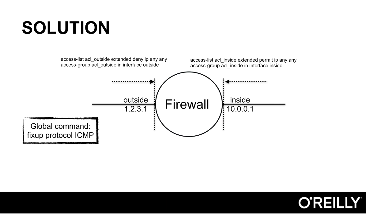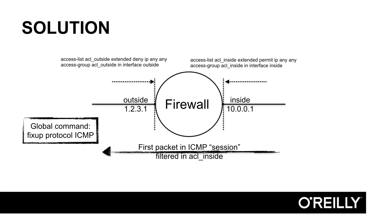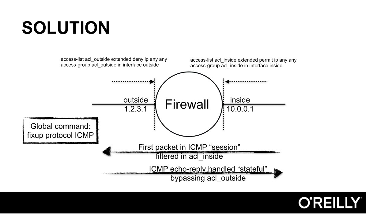Instead, what we do is tell the firewall to treat all ICMP traffic as stateful. We do that by adding the fix-up protocol ICMP command to the configuration. When we add that command, it will allow the return traffic because it will be in the same session. The echo reply coming back from outside to inside will be allowed regardless of the outside ACL. My recommendation is to always add the fix-up protocol ICMP command to your firewall configuration to ensure you can ping out to the internet and get the return traffic back.